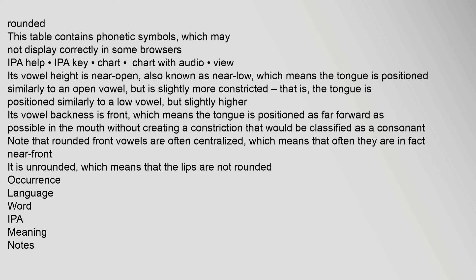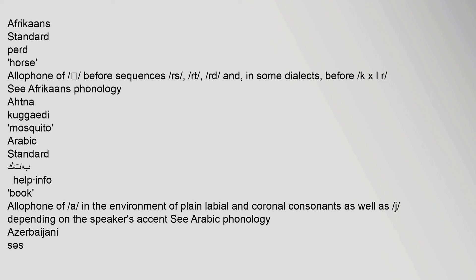Afrikaans: standard; allophone of /a/ before sequences rs, rt, rood, and in some dialects before /kxlr/. See Afrikaans phonology. Akan/Kugati. Arabic: standard ktab. Assyrian Neo-Aramaic: not a near /a/ in some speakers of the Urmia and Jilu dialects; others may use it outside these dialects, where it is widespread; however, the Tayari dialects may use a different realization.